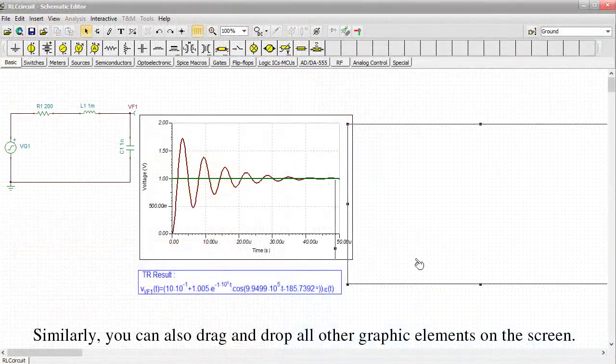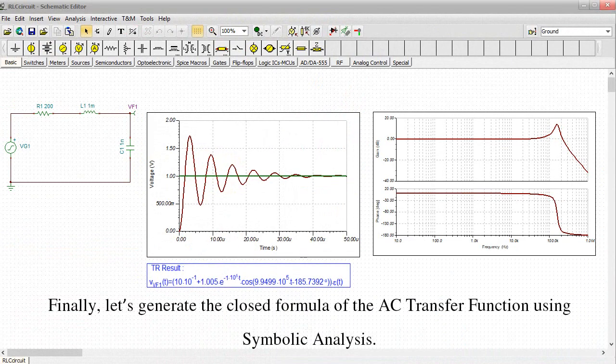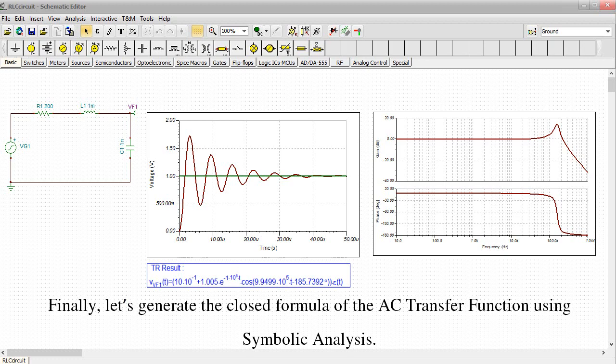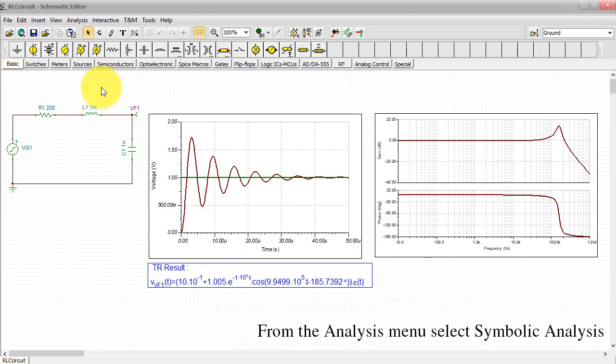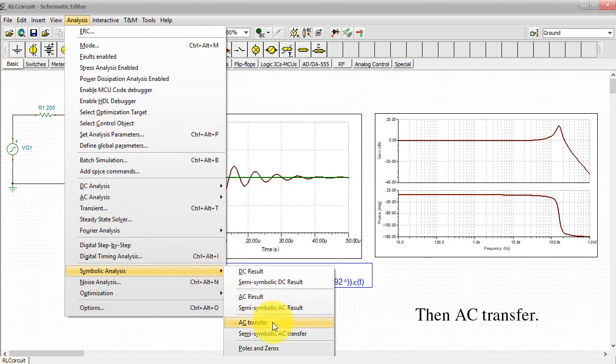Similarly, you can also drag and drop all other graphic elements on the screen. Finally, let's generate the closed formula of the AC Transfer function using Symbolic Analysis. From the Analysis menu, select Symbolic Analysis, then AC Transfer.